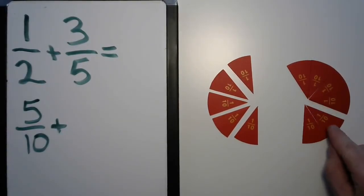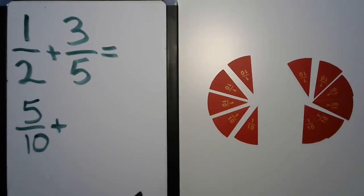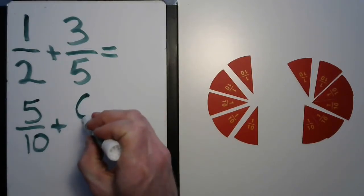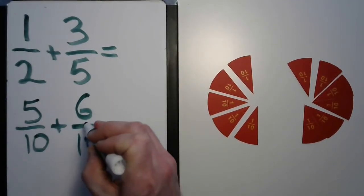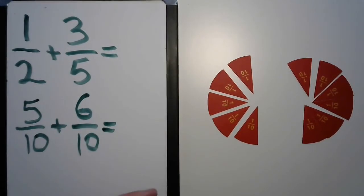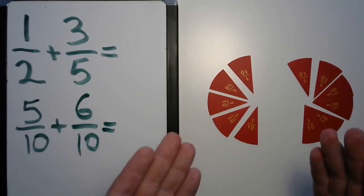And how about our three fifths? One, two, three, four, five, six tenths. Interesting. So, our numbers raised up, but we still have the same shapes, the same amount here.